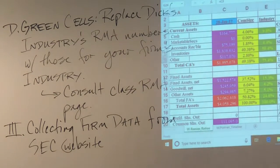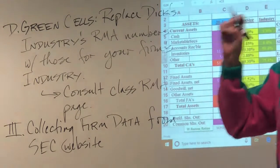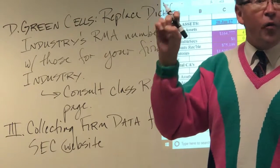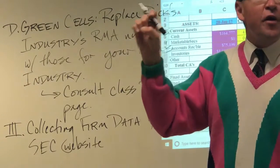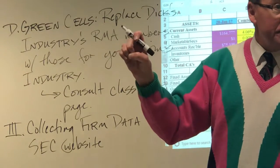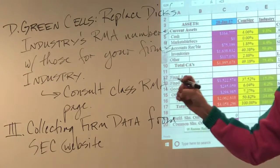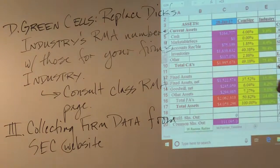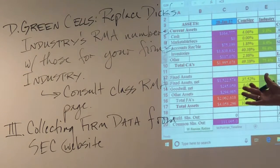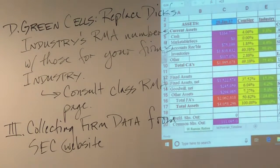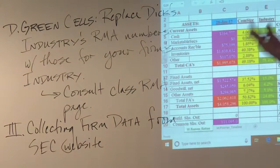So by next Monday, have figured out what company you want to do. That way, when we log on to the SEC's website, instead of looking up Dick's — which you're not going to be using — you look up Home Depot, or Coke, or whatever.